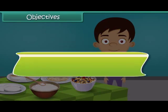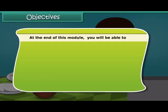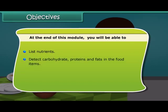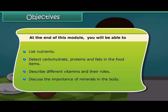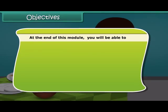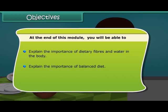Objectives. Dear friends, at the end of this lesson, you will be able to list nutrients and detect carbohydrates, proteins, and fats in food items. You will also be able to describe different vitamins with their roles, discuss the importance of minerals in the body, explain the importance of dietary fibers and water in the body, explain the importance of balanced diet, and define deficiency diseases.